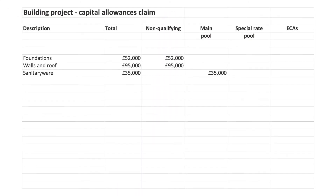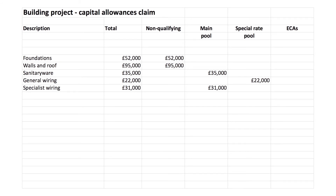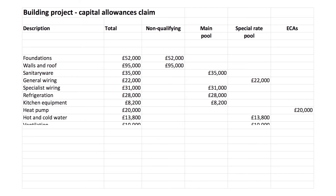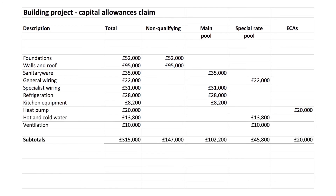By contrast, the electrical costs may need to be broken down, so that for example the general lighting costs are allocated to the heading of special rate expenditure, whereas computer wiring and the whole cost of any alarm systems will normally qualify in full as standard expenditure. Other categories of expenditure will then be allocated to the various headings as appropriate.